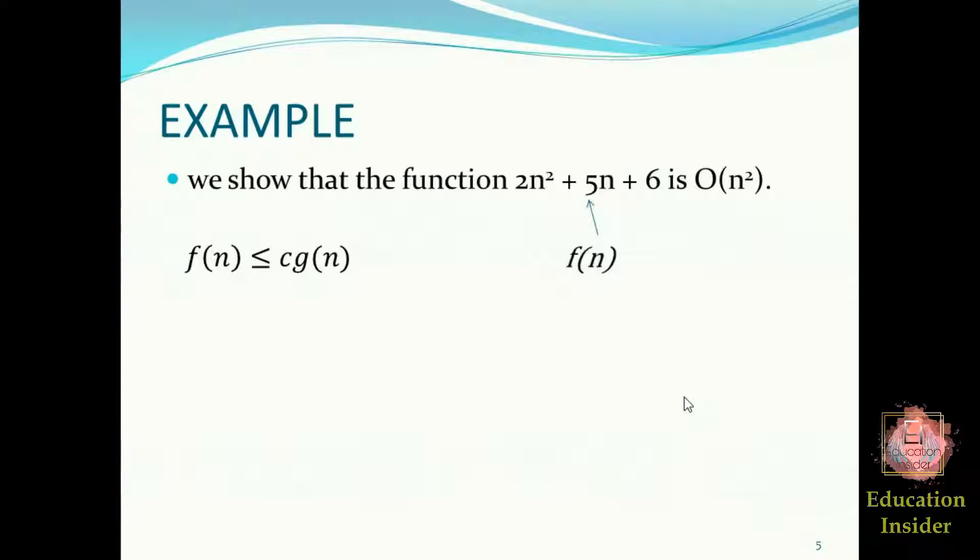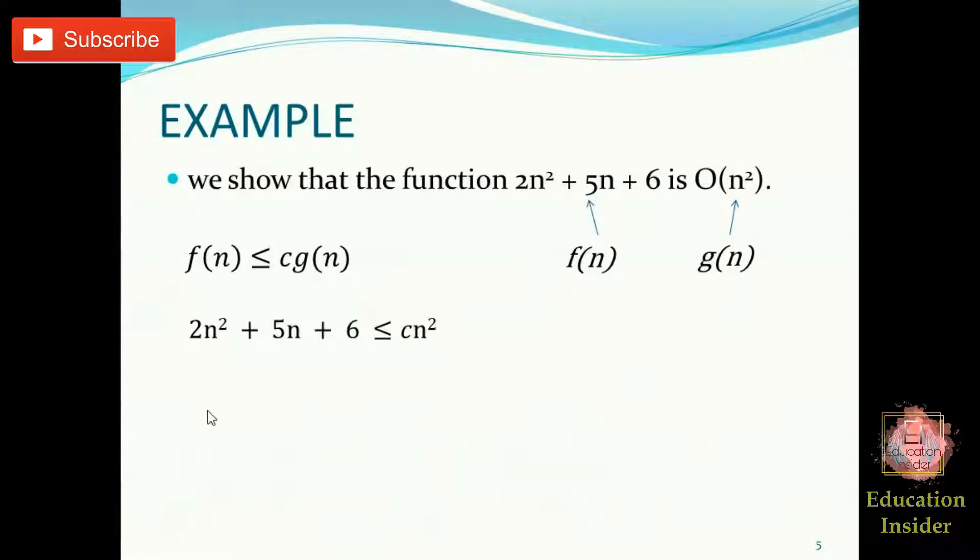What is f(n) and g(n)? This is f(n), and n² will be g(n). Now let's write this f(n) and g(n) in place of this inequality. Let's start making sense of how to prove this inequality.